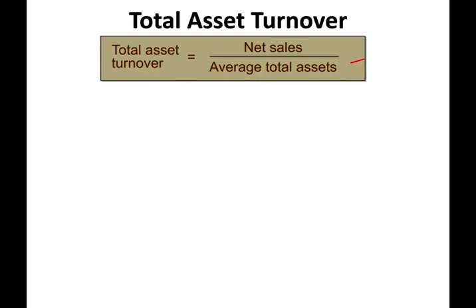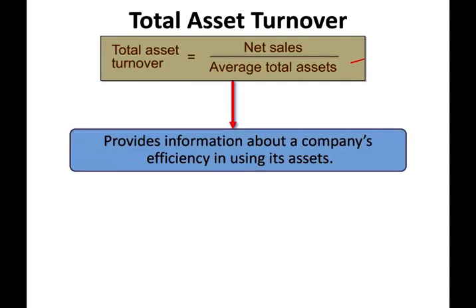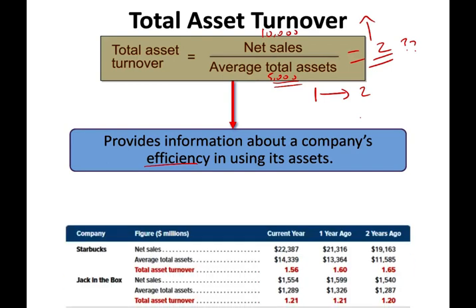The last topic in this session is asset turnover. Asset turnover is net sales divided by average total assets. This ratio provides information about the company's efficiency in using its assets. For example, if you have $5,000 in total assets and $10,000 in net sales, you get an answer of 2, meaning for every $1 in assets on average, you are producing $2 in sales. You want this number to be as high as possible — the higher it is, the more efficiently you are using your assets.